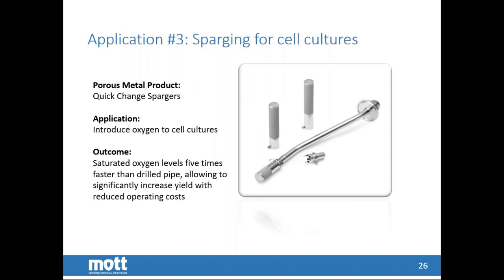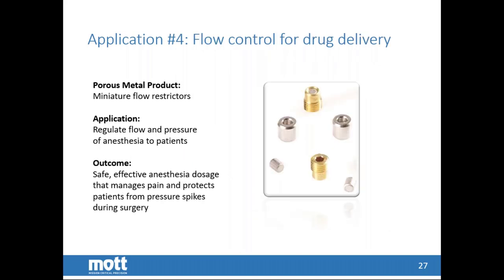This is an example of one of the customizations we did several years ago working with a large biotech company. These are spargers used in bioreactors for cell cultures. Typically, these spargers would be welded onto a wand submerged into the bioreactor. This customer was looking for a way to have a replaceable unit, so we came up with a design that is removable with an O-ring seal. They can be removed and cleaned out of place, or they could experiment with different porous elements to optimize their process. This application is also flow control for drug delivery, specifically using a high-tolerance flow restrictor that allows you to control the amount of gas being delivered to the patient, resulting in a safe, effective anesthesia dosage that manages the pain and protects the patient from pressure spikes during surgery.